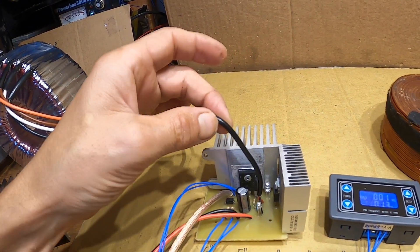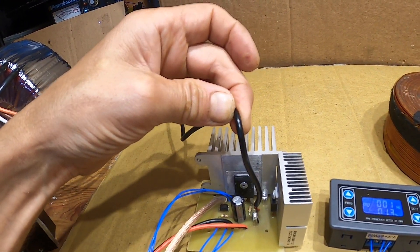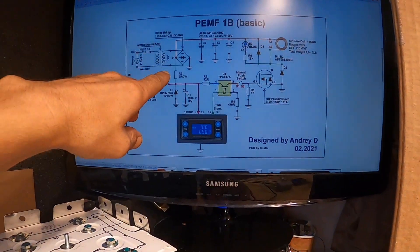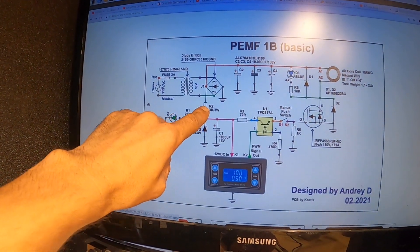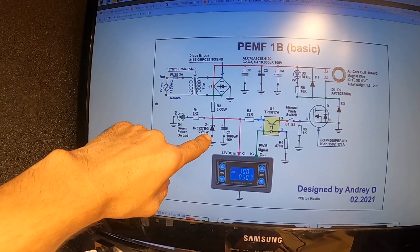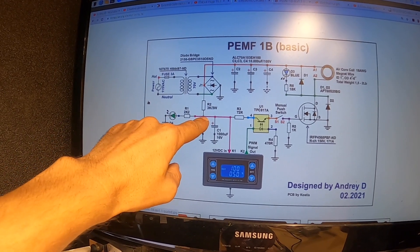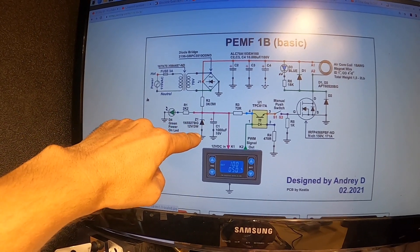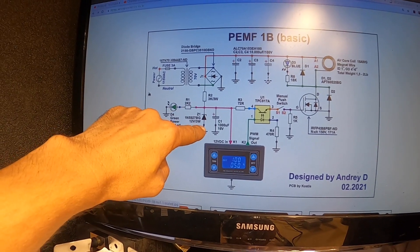So I end up bringing 12 volt into this circuit. Instead of having this resistor here and a Zener, I have removed them and I added a 12 volt into here and here.